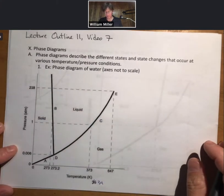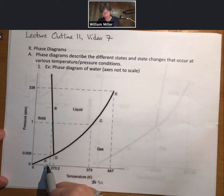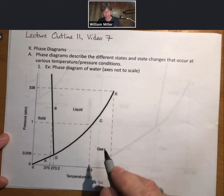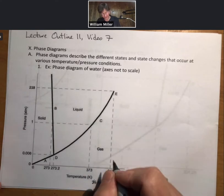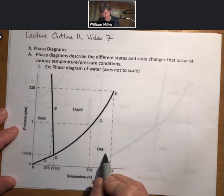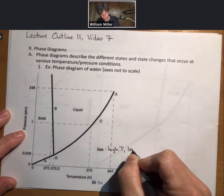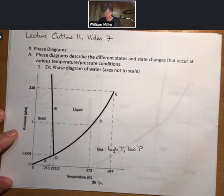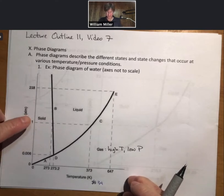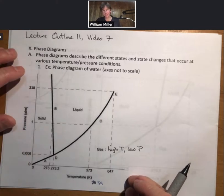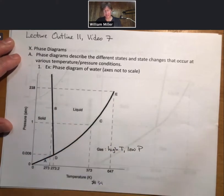They'll almost always look like this. There'll be a series of lines, solid, liquid, and gas phases. What you can see is that the gas phase exists at high temperature and low pressure, the solid phase exists at low temperature and a variety of pressures, and liquid is somewhere in between.